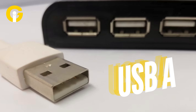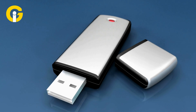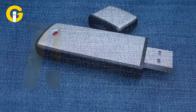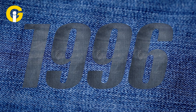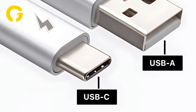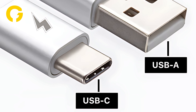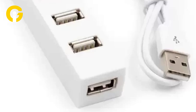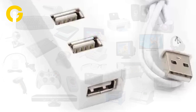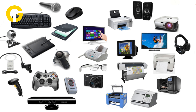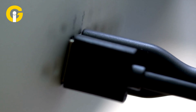Now, what is USB-A? USB-A is the most common and familiar type of USB connector, and it's been around since 1996. It has a flat and rectangular shape that fits into a horizontal port. Unlike USB-C, USB-A is not reversible, so you have to insert it the right way. USB-A is mainly used for connecting peripherals and accessories such as keyboards, mice, flash drives, printers, scanners, cameras, etc.